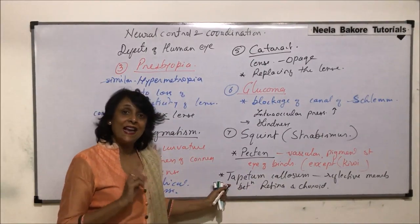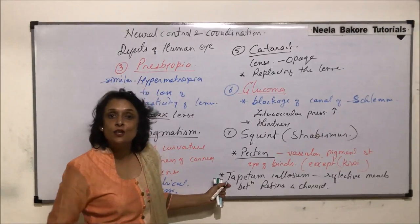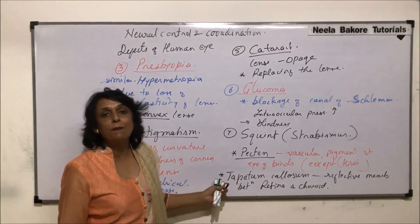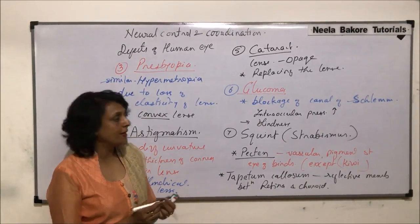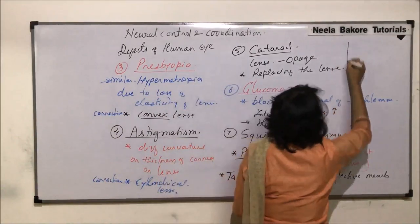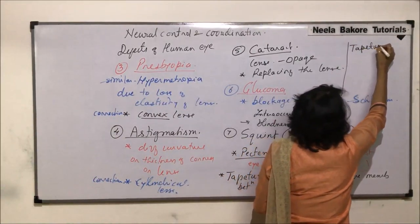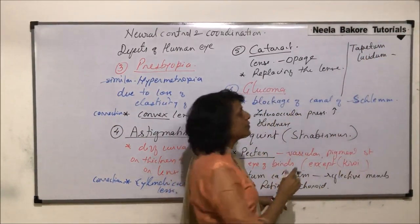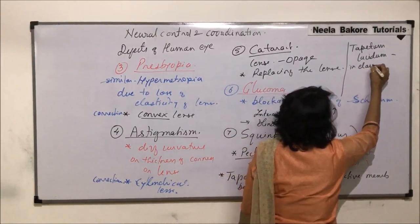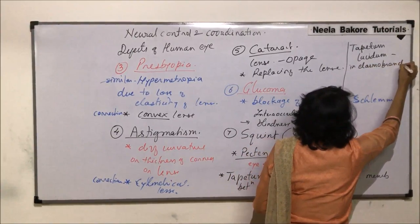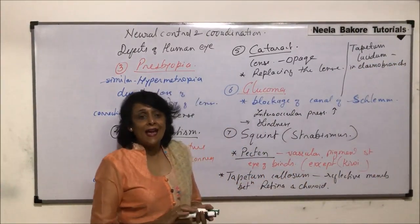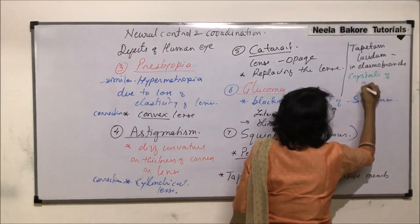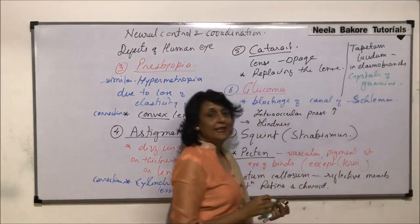A similar layer is present in elasmobranchs — cartilaginous fishes. In their case the layer is not called tapetum callosum; it is known as tapetum lucidum. Its location and function are the same, but it contains crystals of guanine.